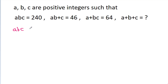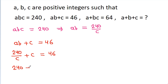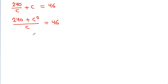We have ABC is equal to 240, that means AB will be equal to 240 by C. And we have AB plus C is equal to 46, so substituting: 240 by C plus C is equal to 46, and it is 240 plus C squared by C is equal to 46. Cross multiplying, 240 plus C squared will be equal to 46C.